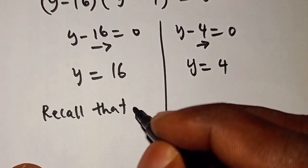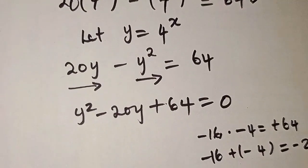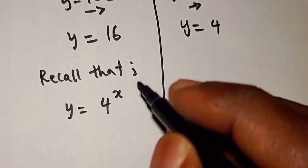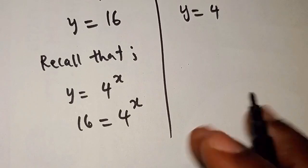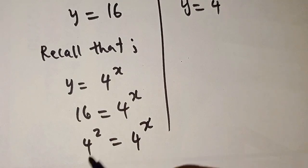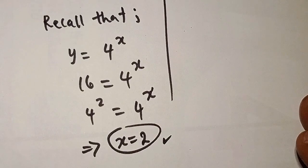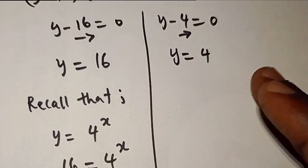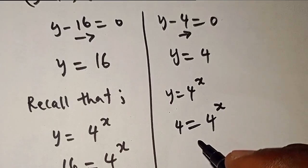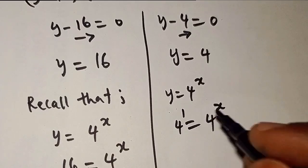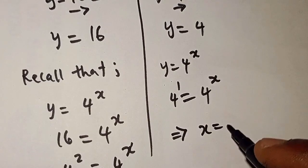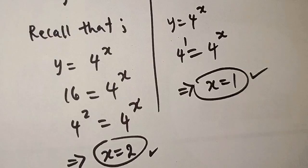Don't forget that we are not looking for the value of y — we are looking for x. We recall that y equals 4 to the power of x. Taking y equals 16: we have 4 to the power of x equals 16, and we write 16 as 4 to the power of 2. Since the bases are the same, the exponents are equal, so x equals 2. Taking y equals 4: we have 4 to the power of x equals 4, which is 4 to the power of 1, so x equals 1. Therefore we have two solutions: x equals 1 and x equals 2.